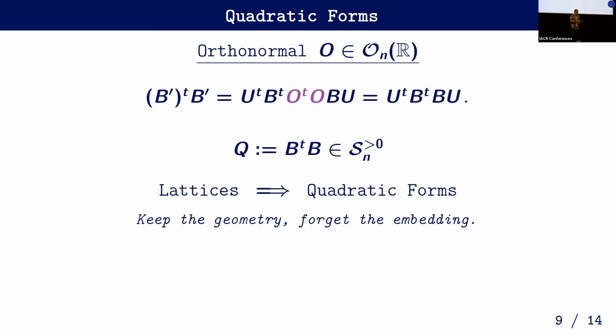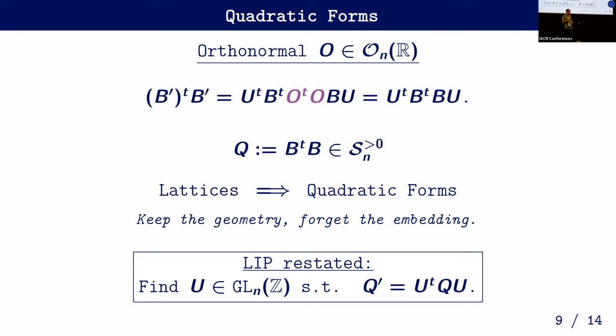We move from the world of lattices to the world of positive definite quadratic forms, keeping all the inner products but forgetting the particular embedding of the lattice. A quadratic form represents lattice bases up to all rotations, allowing us to fully restate the lattice isomorphism problem: given Gram matrices, find a unimodular transformation U such that Q' = U · Q · U^T. By restricting Q to integer quadratic forms, the whole problem uses only integers and we get rid of all floating point real numbers.